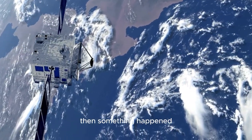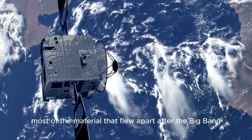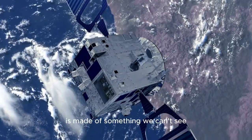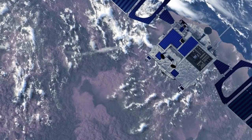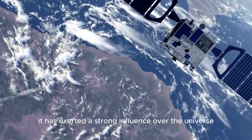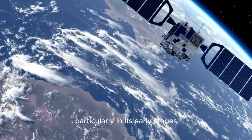Then, something happened. Most of the material that flew apart after the Big Bang is made of something we can't see called dark matter. It has exerted a strong influence over the universe, particularly in its early stages.